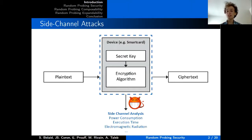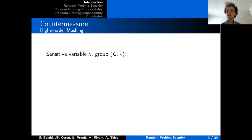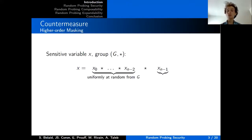To protect implementations on embedded devices, many countermeasures have been developed. The most widely used of them is the masking countermeasure, where the idea is to split a sensitive variable x into n values that we call shares, where the first n-1 values are generated uniformly at random from the underlying group, and the last element is the combination of the random elements and the secret value, aiming to break the dependence of the secret with any set of n-1 shares.